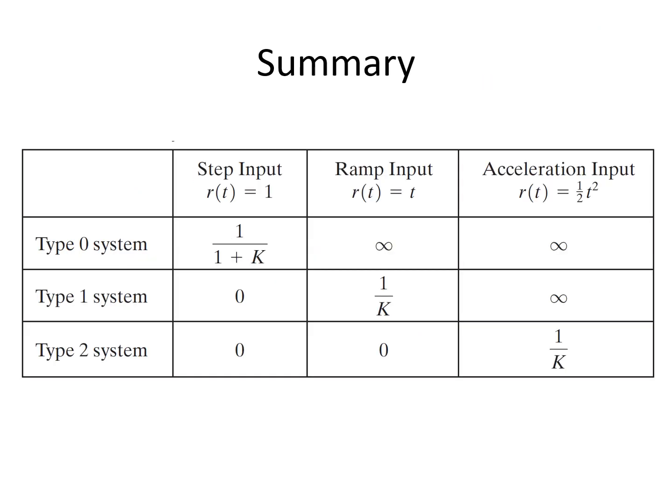This table summarizes the type of input and the corresponding error values. For a step input, a type 0 system gives error 1/(1+K), while ramp and parabolic inputs give infinity. For a type 1 system, step gives 0, ramp gives a constant error, and parabolic gives infinity. For a type 2 system, step and ramp give 0, while parabolic gives a constant error 1/K. Remember this table to find steady state error and error constant values for a given system.